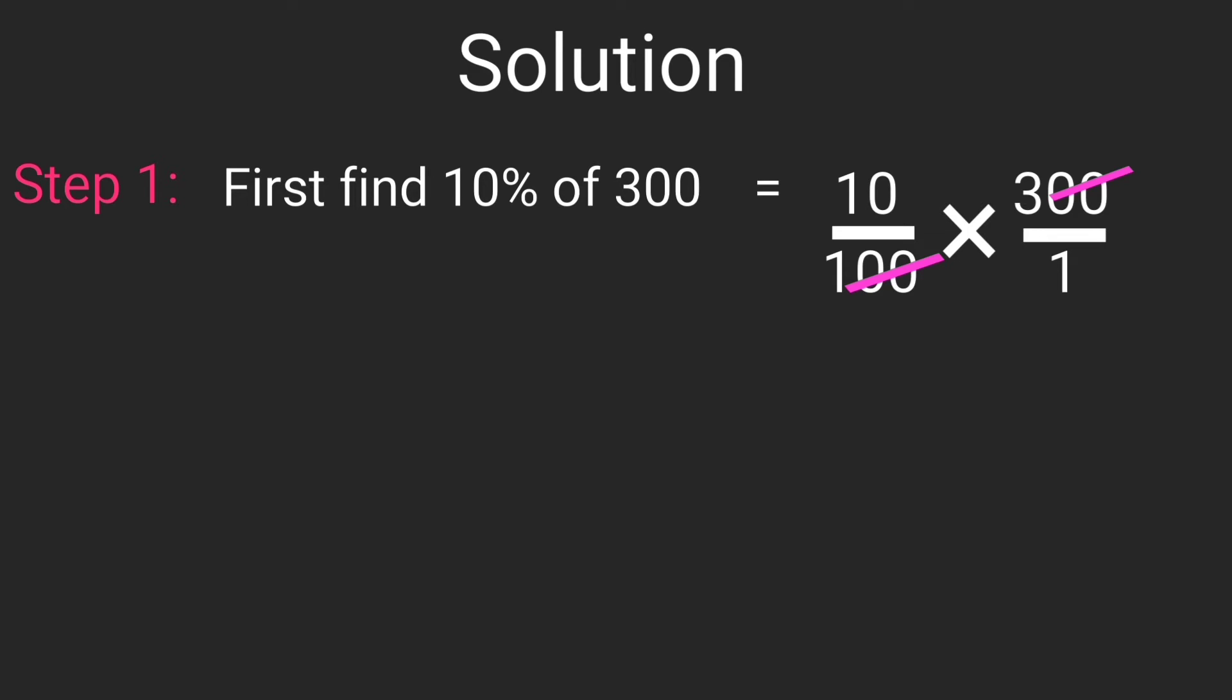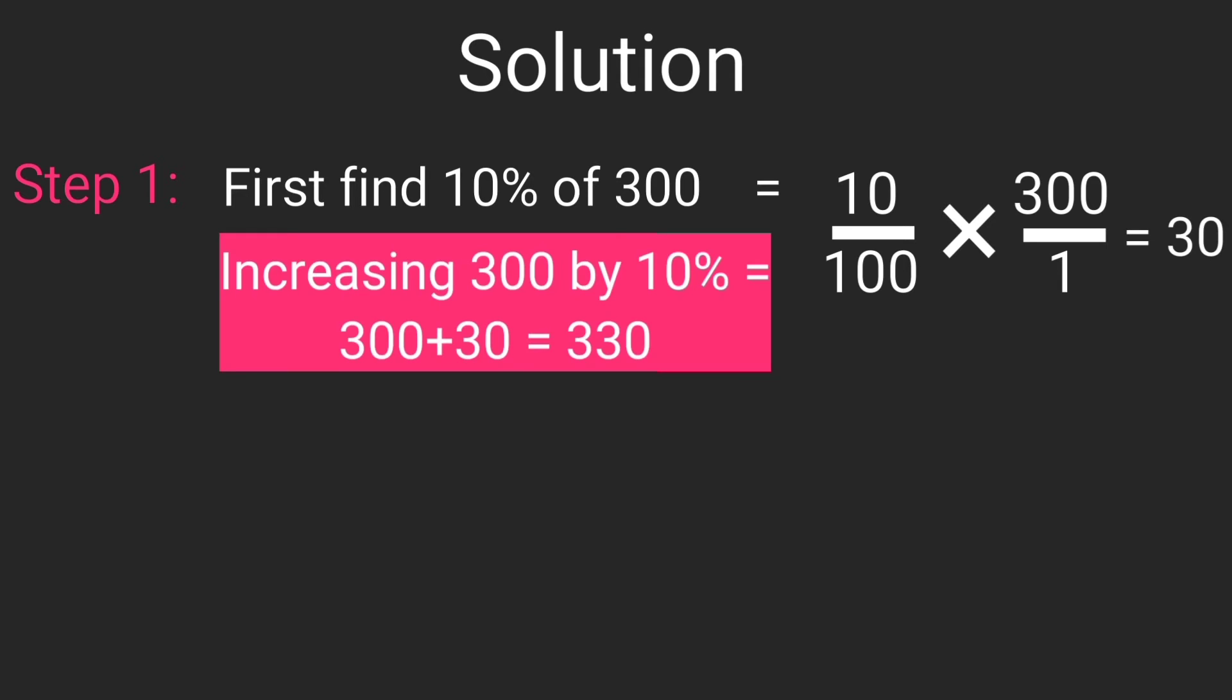Increasing 300 by 10% is going to be 300 plus 30 to give you 330.